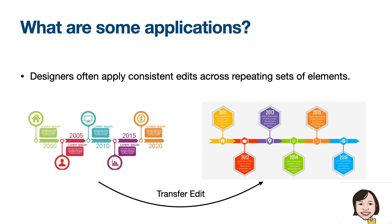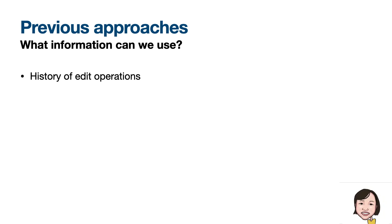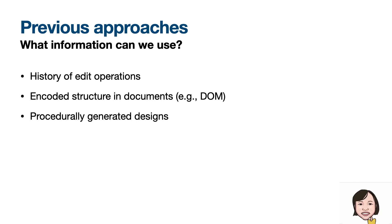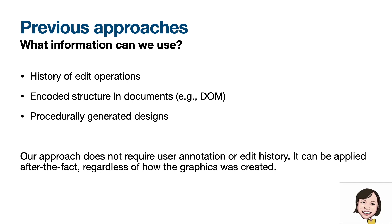Once we have robust correspondence, we can also use it for other applications, such as suggesting similar designs. There are several different sources of information we could use. Previous approaches include leveraging the history of edit operations, encoded structures in the document, or explicitly specified structures in procedurally generated designs. We propose a different approach that does not require user annotation or edit history. Our method can be applied retroactively to any design regardless of how it was created.